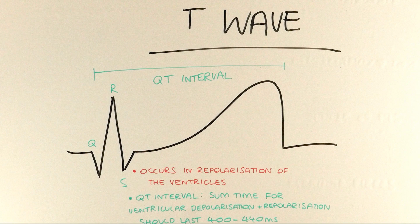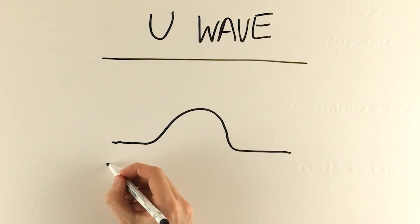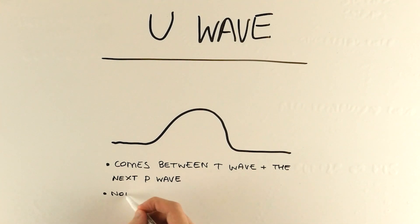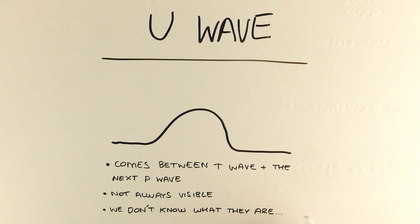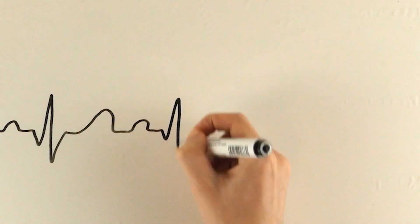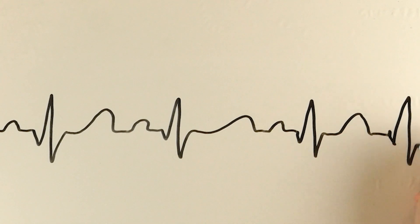The last feature you might sometimes see is a U wave. It tends to be quite small, and we're not 100% sure why it happens. They're thought to represent repolarization of the Purkinje fibers, but because they're not always visible, it's uncommon to rely on them for regular practice. So there's our complete ECG wave, it follows the electric cardiac cycle, and these waves repeat over and over ad infinitum.